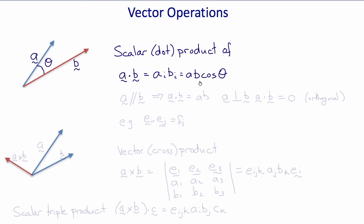Therefore, as a is parallel to b, the dot product of a and b is the product of their magnitudes. And if a is perpendicular to b, then the dot product is zero and the vectors are orthogonal.